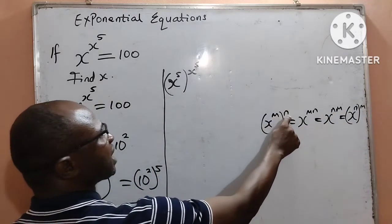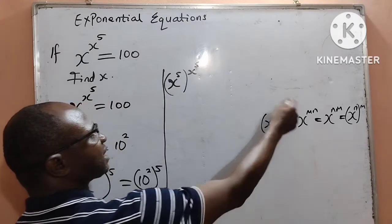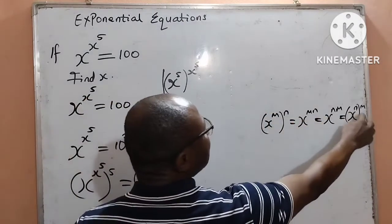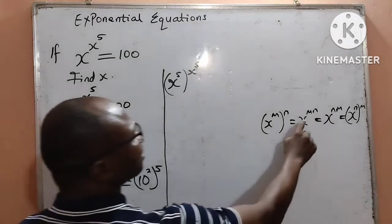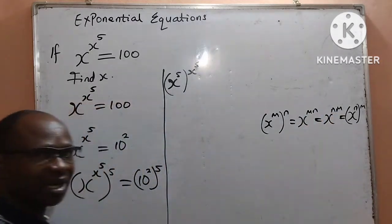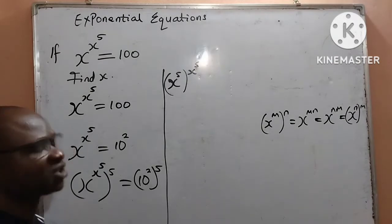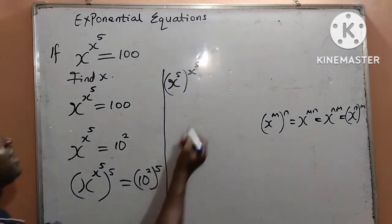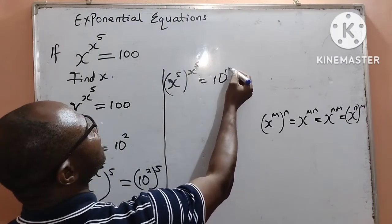The n inside the bracket goes outside, and the n outside the bracket comes inside. That is exactly what I have done here. By the right hand side, since mn equals nm, I can now apply the right hand side to have 10 to the power of 10. That is 2 times 5.